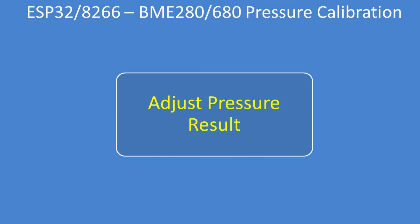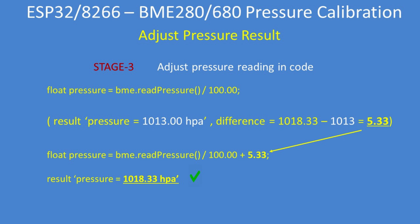Now we need to adjust the result from the sensor, since we live in Paris in this example. The line to read the sensor is: float pressure equals BME dot read_pressure divided by 100, to get the result in hectopascal. The result from my particular sensor is 1013 hectopascal. So the difference between my sensor and the average air pressure around me is 1018.33 minus 1013, which is 5.33. We just add that constant offset to the sensor for this location, giving a result of 1018.33 hectopascal.